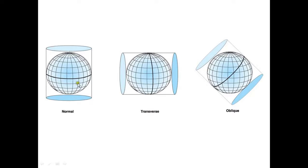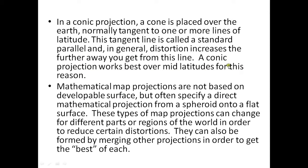Looking at the image: if the whole Earth is placed in a cylinder and the Earth's axis is parallel to the cylinder, it is called a normal cylindrical projection. If the axis is oblique to the cylinder, it is called an oblique cylindrical projection system.